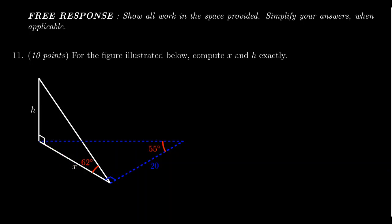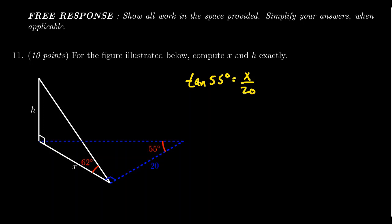Given that we have opposite over adjacent, we're going to use the tangent ratio to solve for X. Tangent of 55 degrees is equal to X over 20. We can solve for X by multiplying both sides by 20, giving us X equals 20 times tangent of 55 degrees.